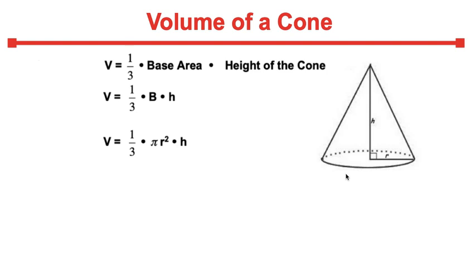And the volume formula is 1 third times the base area times the height of the cone. So the base area is the bottom circular portion, which is a circle. So the area formula of a circle is pi times radius squared.